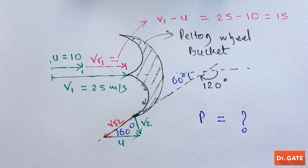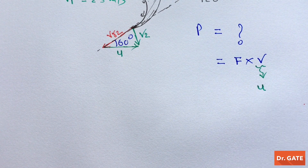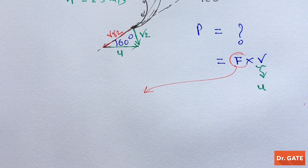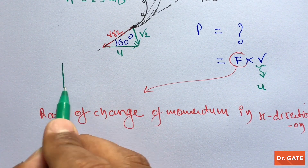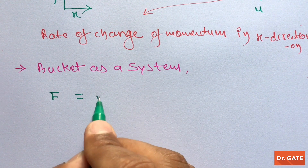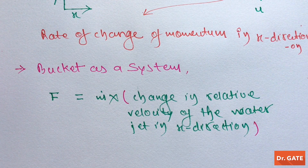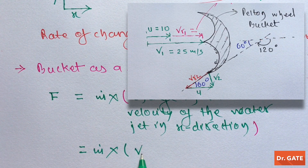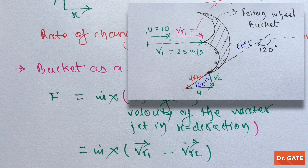The expression for power is force into velocity, where this velocity is the bucket's peripheral velocity. This force is the tangential component of force, which is the rate of change of momentum in the x direction. If we take the bucket as a system, then this tangential component of force is m-dot into the change in relative velocity of the water in the x direction. Mathematically it is m-dot into relative velocity at inlet minus relative velocity at outlet. Note that we have taken only the relative velocity component here, because when you are on the bucket, you will observe only the relative velocity.